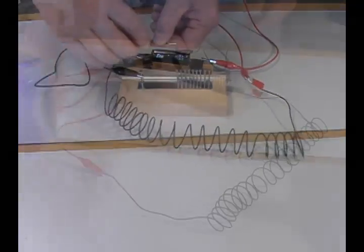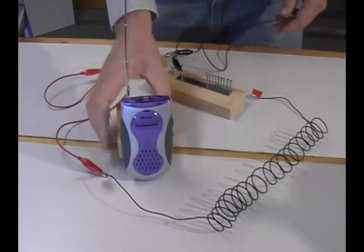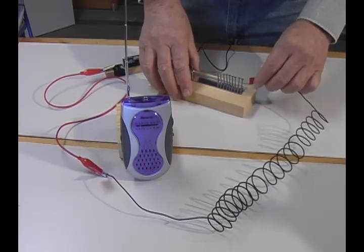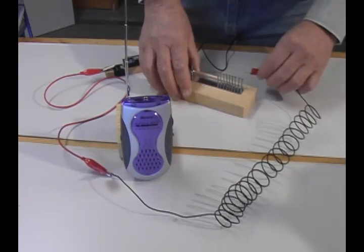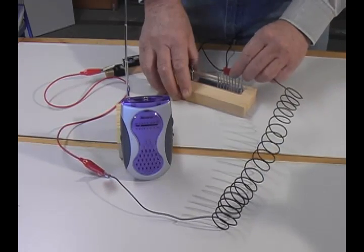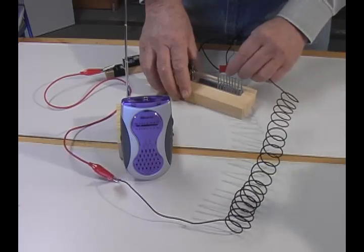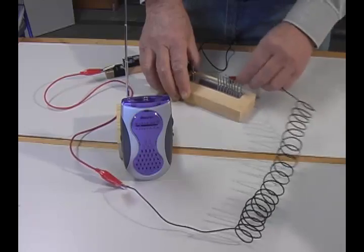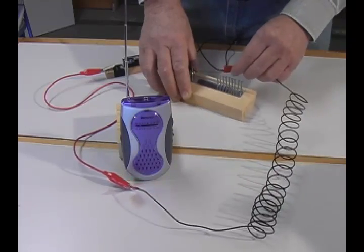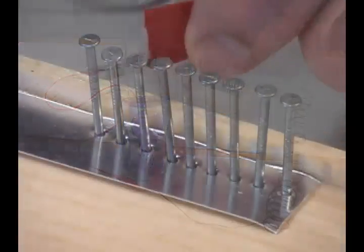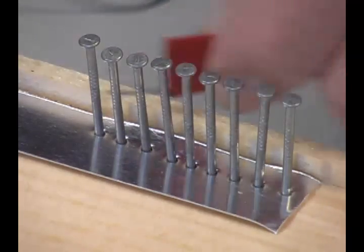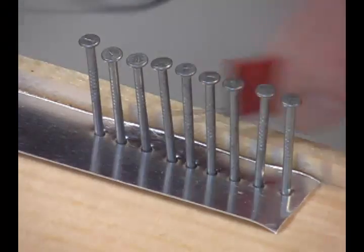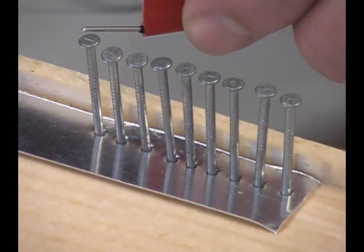Again, tune an AM radio to a blank spot on the dial and turn up the volume. Sliding the available antenna wire along the row of nails creates a buzz on the radio. As the wire moves across the nails, the circuit is alternately completed, then broken, each contact sending a pulse of electromagnetic radiation.